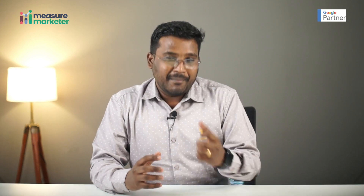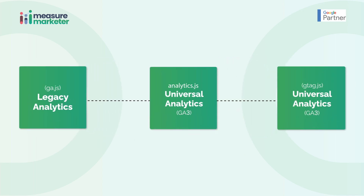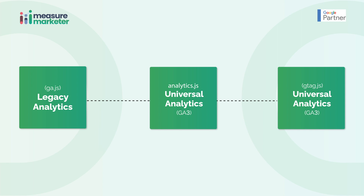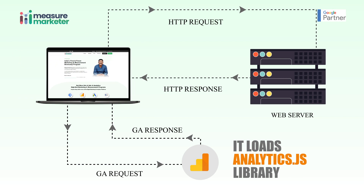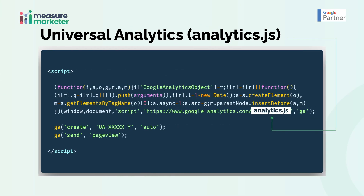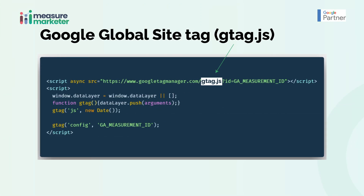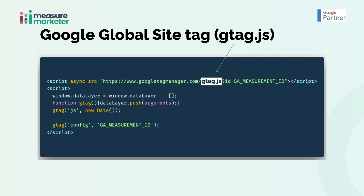Then Google rolled out another update, which was not called a new version — it was still called Universal Analytics — but Google changed the library. Remember: first was ga.js, then analytics.js, and now this third library was called gtag.js. Everything was the same — the reports remained the same — but only the tracking code deployed on the website changed from analytics.js to gtag.js. That is the third version.